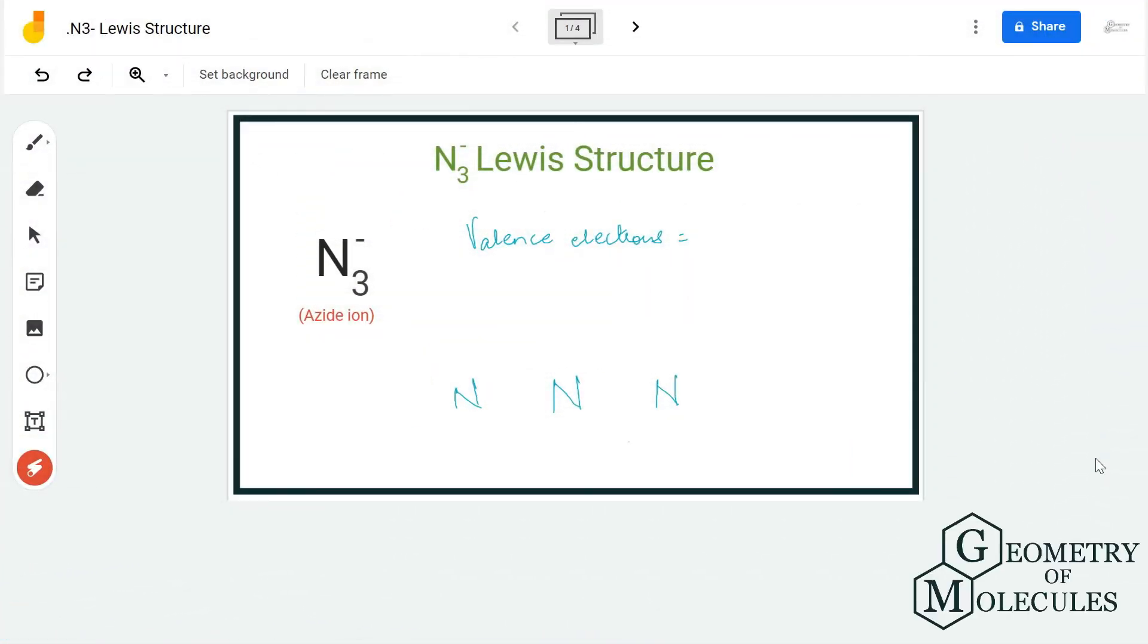Hi guys, today in this video we are going to look at the Lewis structure for azide ion. It is made up of three nitrogen atoms and it has a negative charge as it accepts one electron. Hence, we put the sign of a negative charge like this.